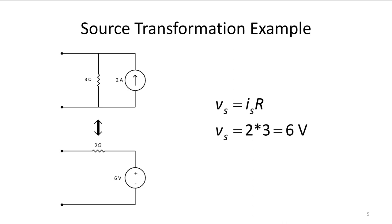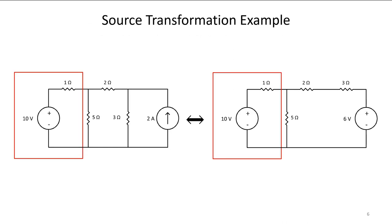V equals IR, so Vs is two amps times three ohms equal to six volts. Therefore our replacement is six volts and a three ohm resistor in series. We have the circuit on the left and we're going to transform it to the circuit on the right while preserving the 10 volt source.